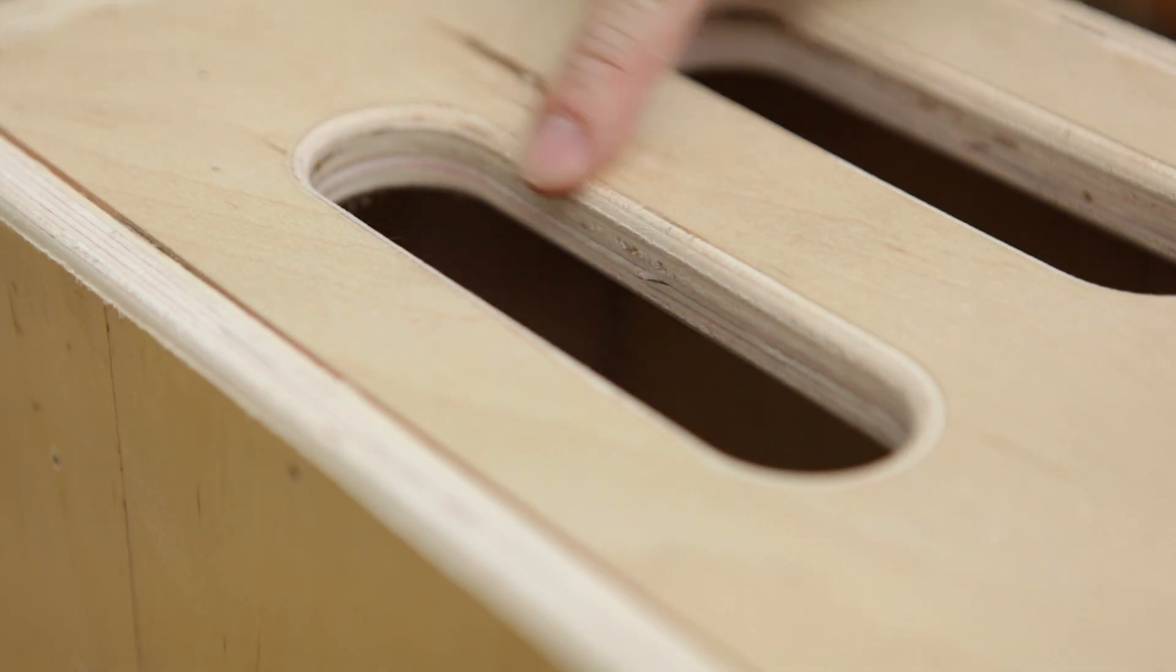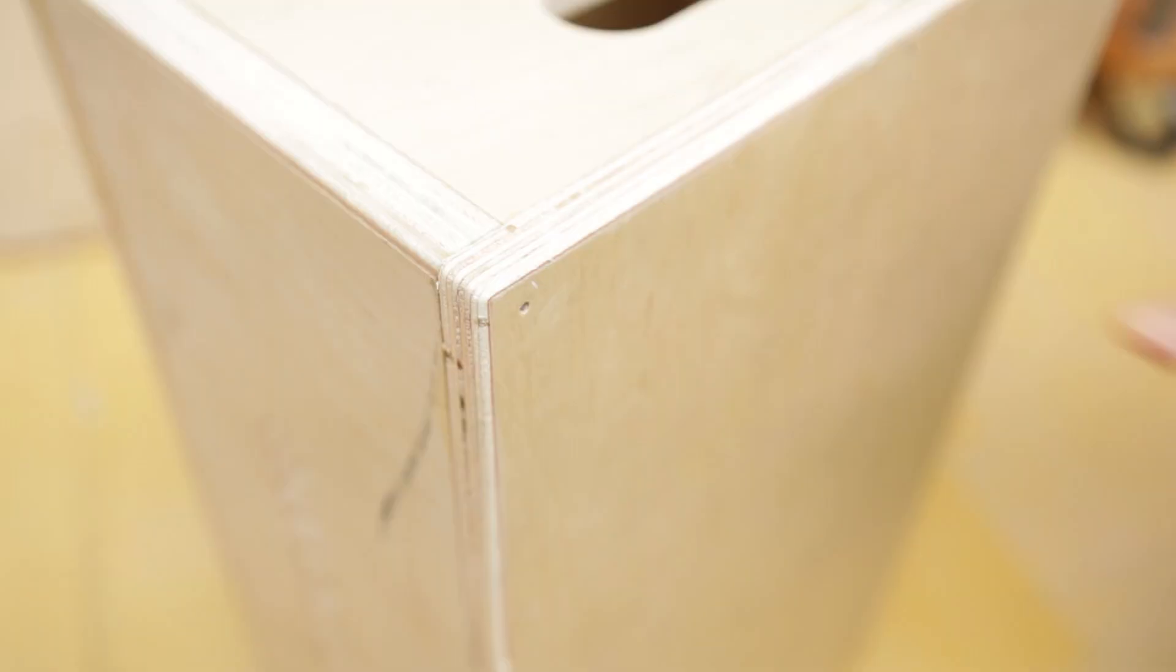Then you'd put the rounded edges on the handle holes, on both sides of the workpiece, using either a trim router or a router table. And finally, you'd knock the thing together, and then you'd flush trim and round off the edges with a router or a router table.